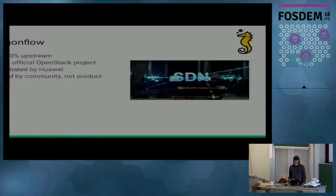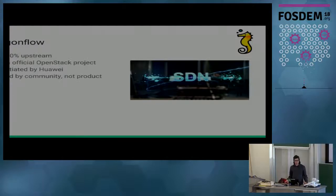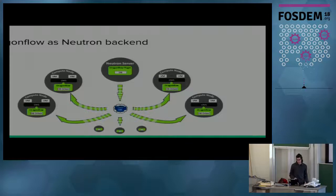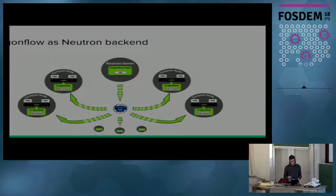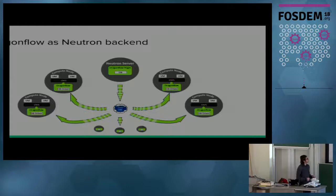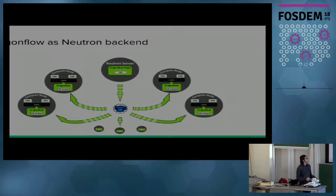Some more trivia about DragonFlow: it is a 100% upstream and open source project. It was an official project within the OpenStack community, initiated by Huawei a few years ago. It's been in OpenStack since the Kilo release, and it is led entirely by community and not by product. Here is a high-level architecture overview of DragonFlow in an OpenStack Neutron deployment. We have three major components: the Neutron server with our DragonFlow management code, the DragonFlow distributed database in the center, and compute nodes running virtual machines connected to an OVS bridge with a DragonFlow controller controlling each local OVS bridge.